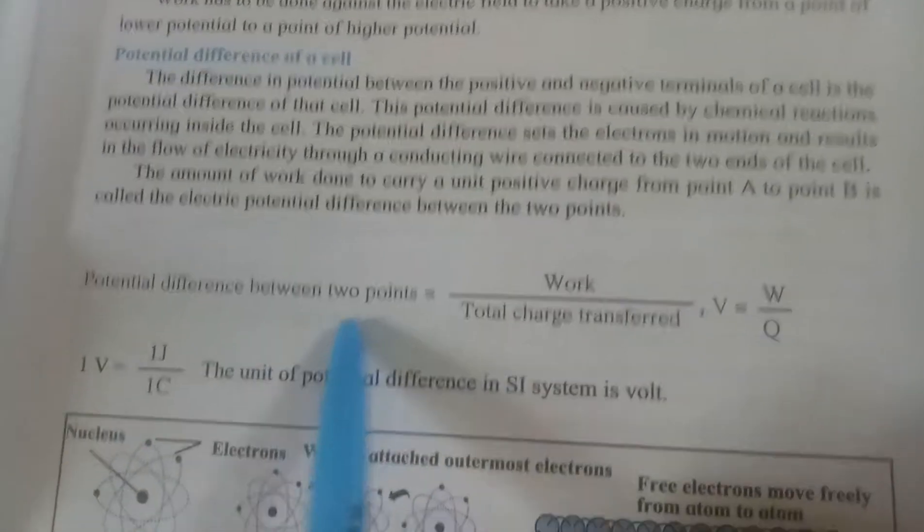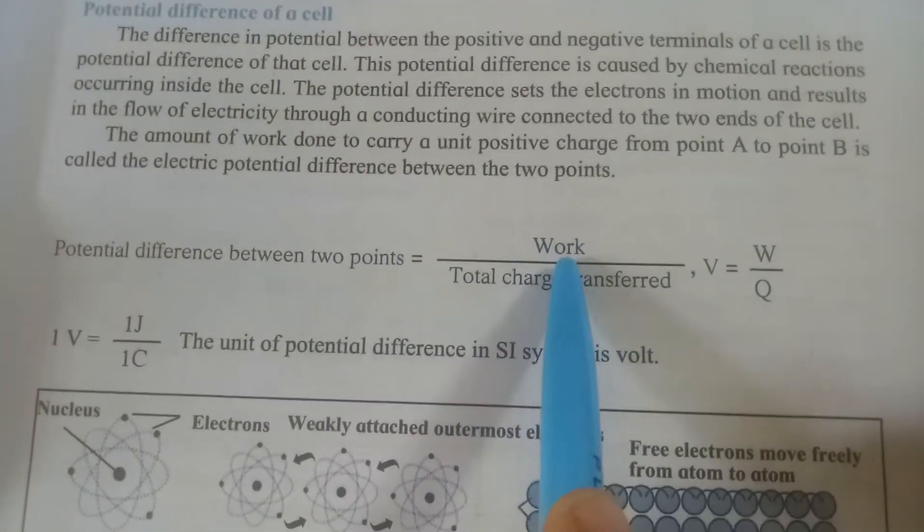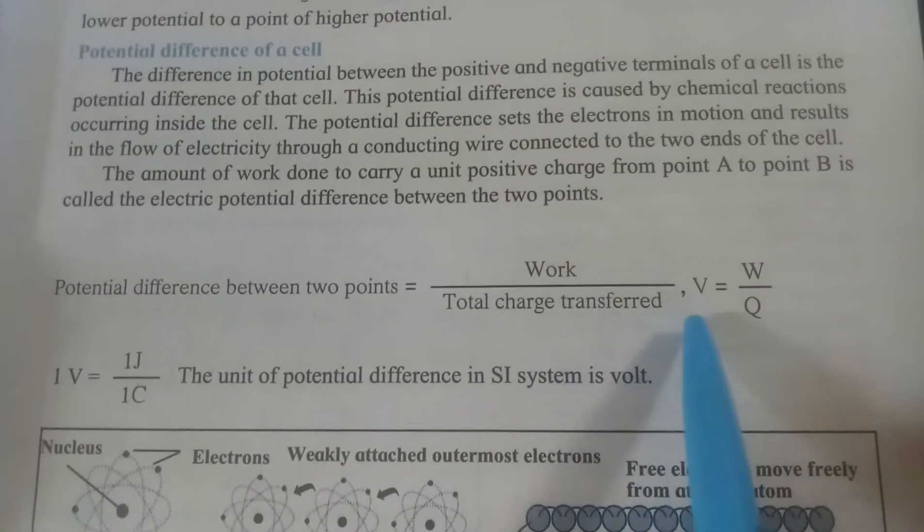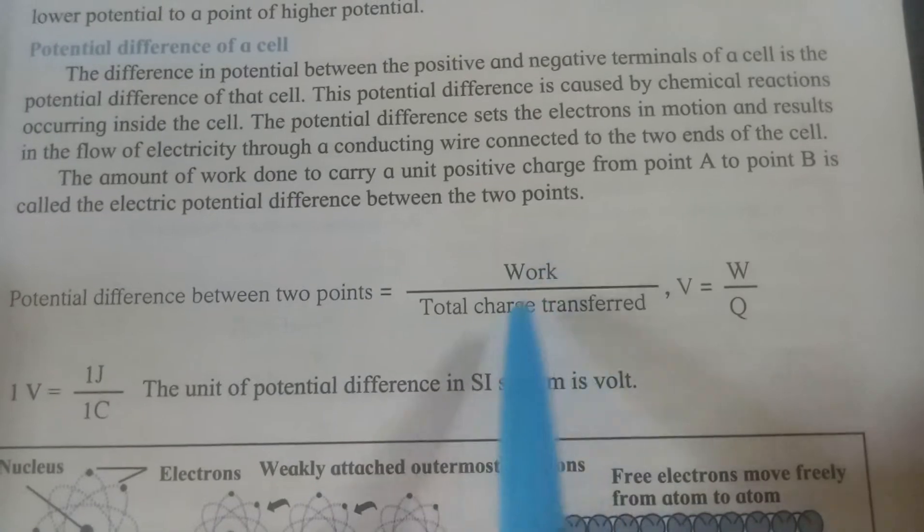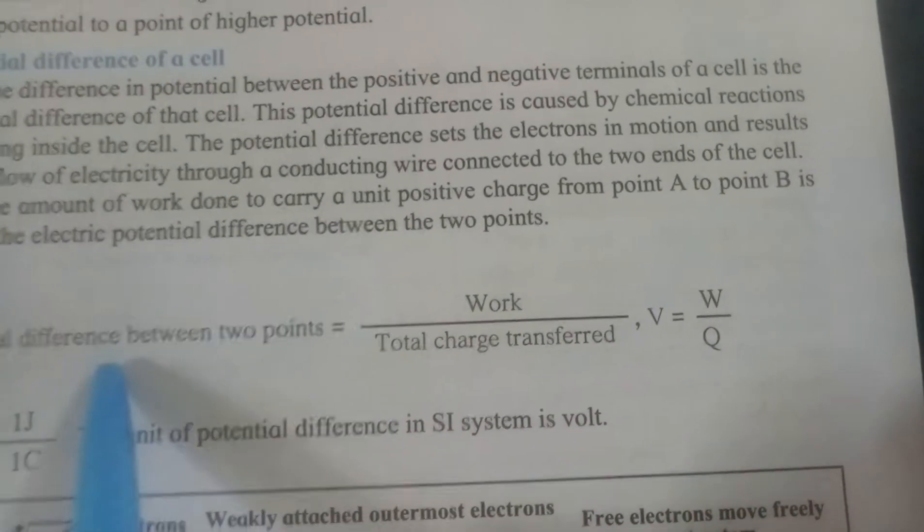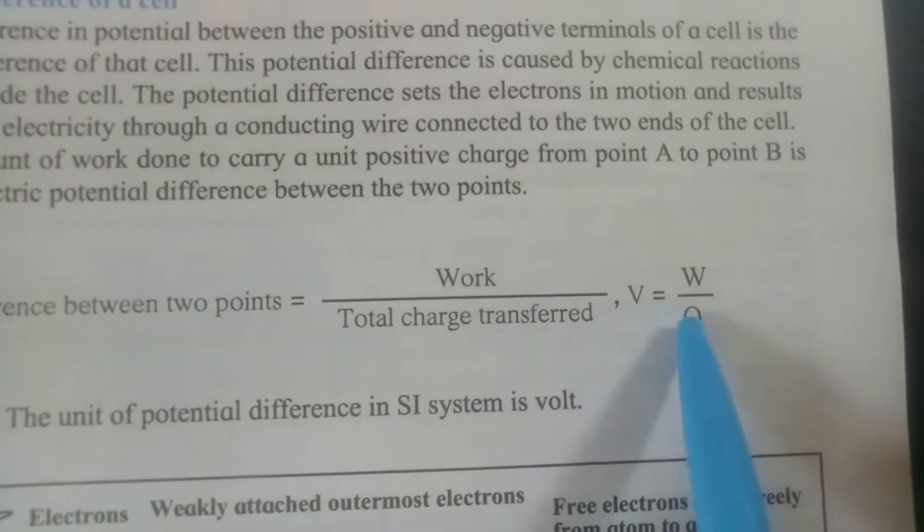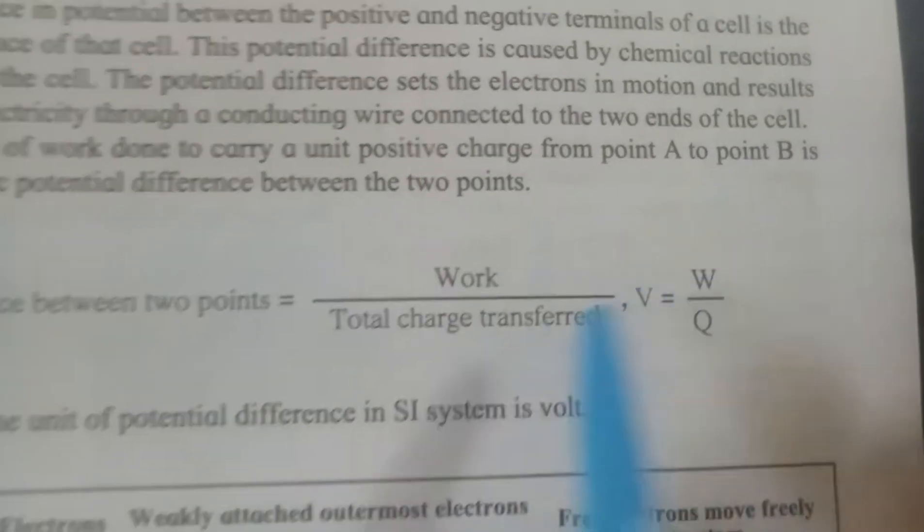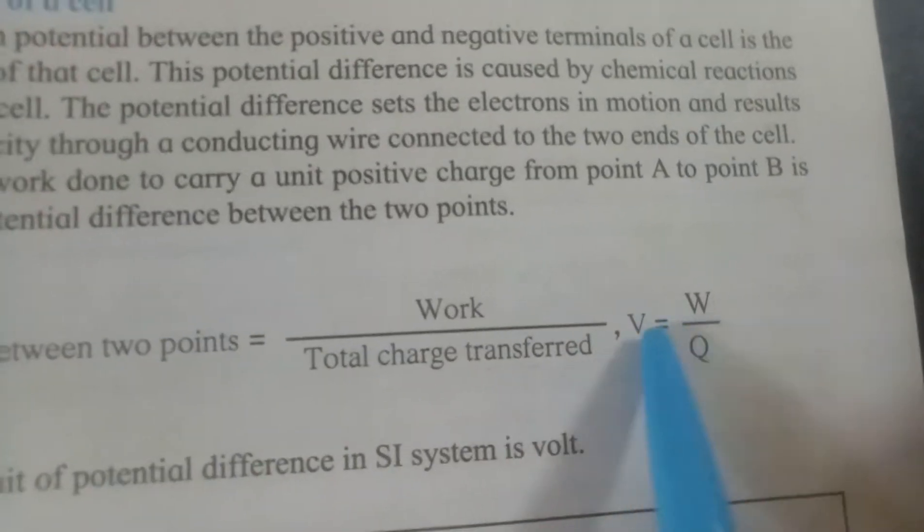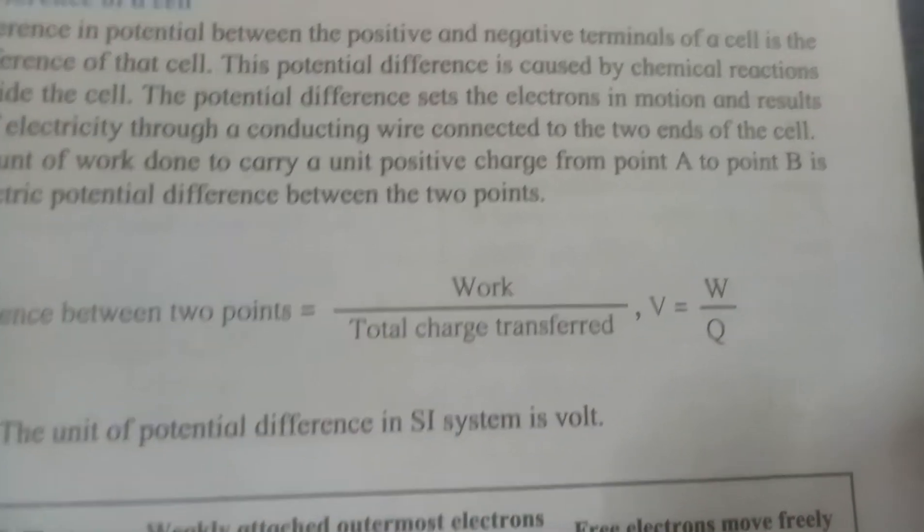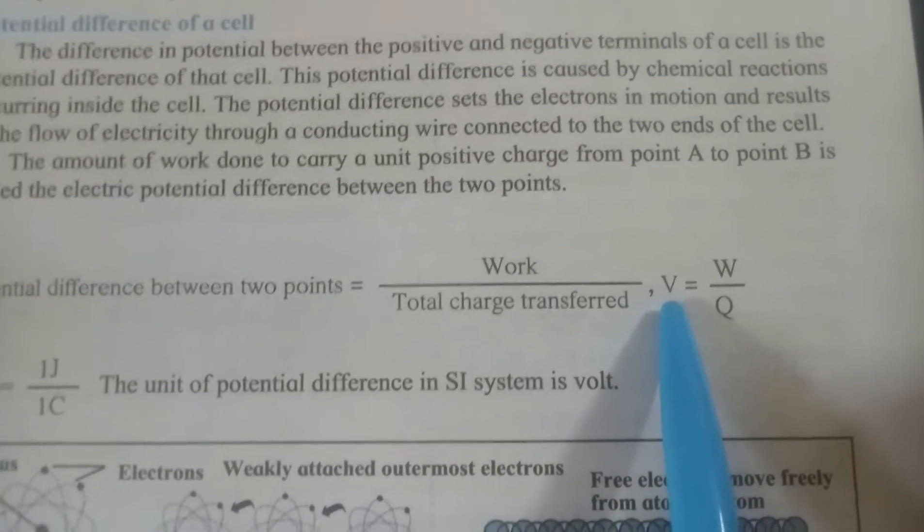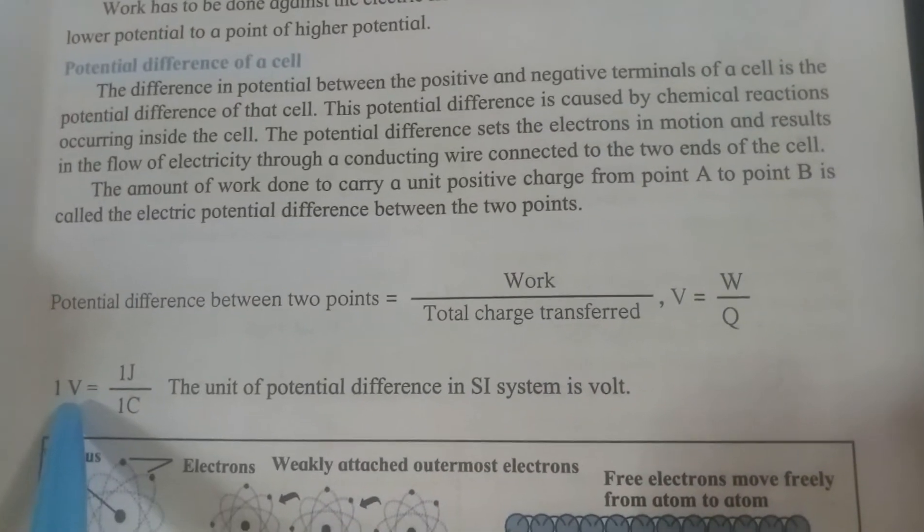Potential difference between the two points formula is work upon total charge transfer. Work upon total charge transfer. So, potential difference is V equals work W upon total charge transfer Q. So, now here are the units that is V that is potential difference unit 1 volt.